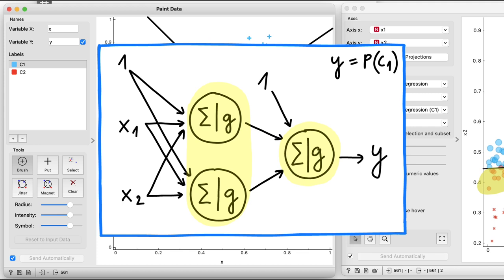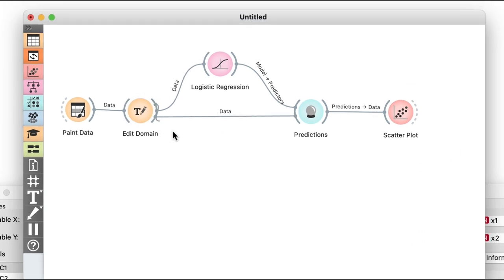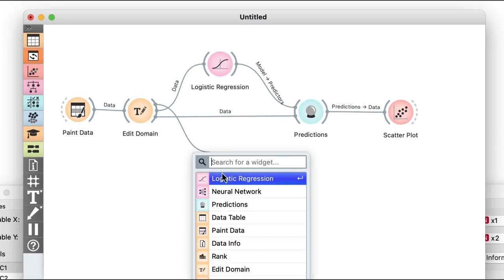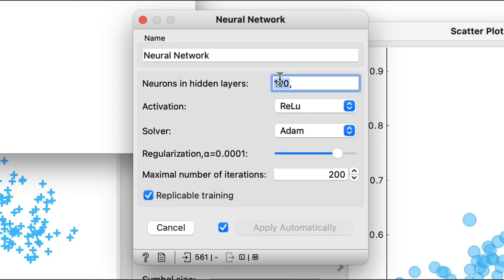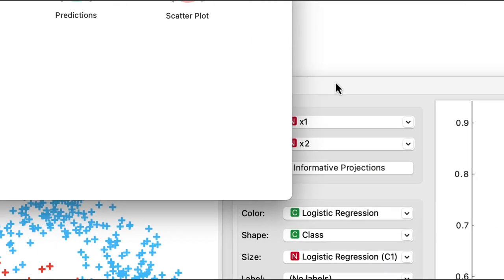Now we can construct such neural network using the neural network widget in Orange. We'll instruct it to contain only two neurons in the hidden layer, use the logistic function for activation, and an LBFGS solver to compute the weights from the training data.